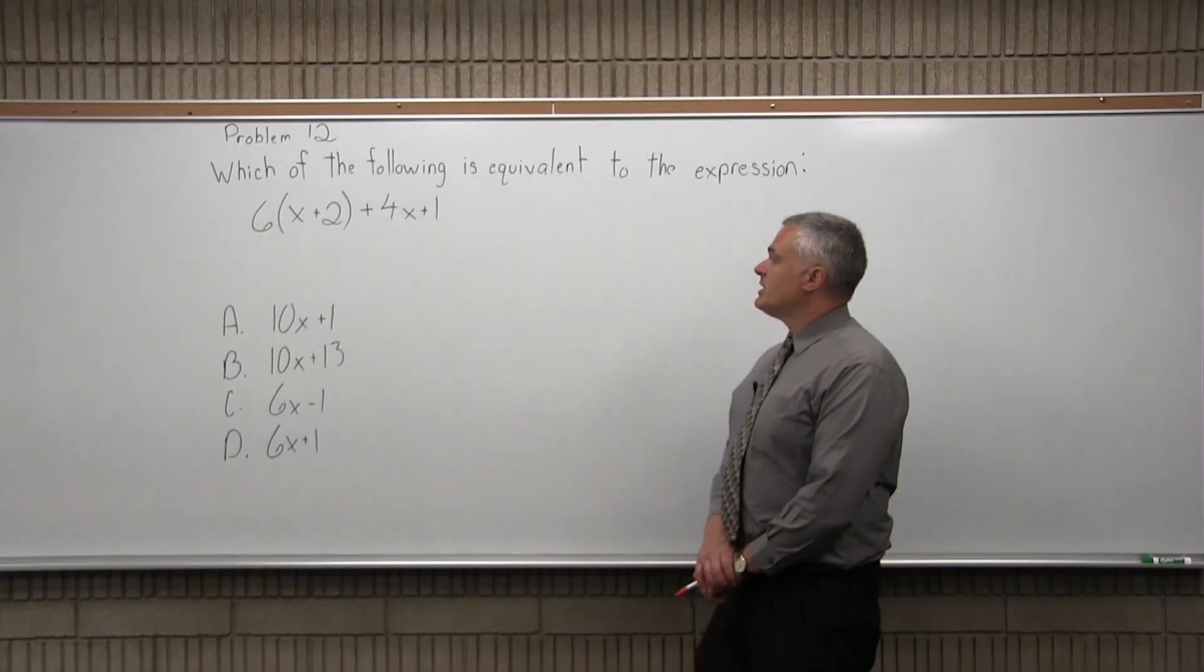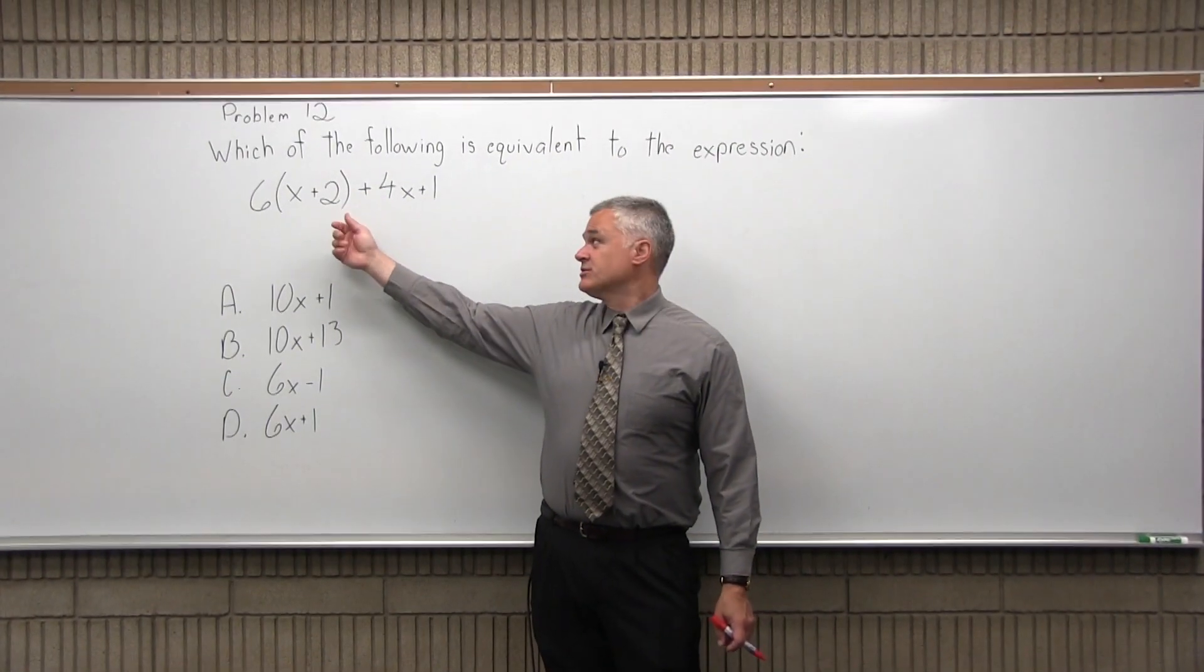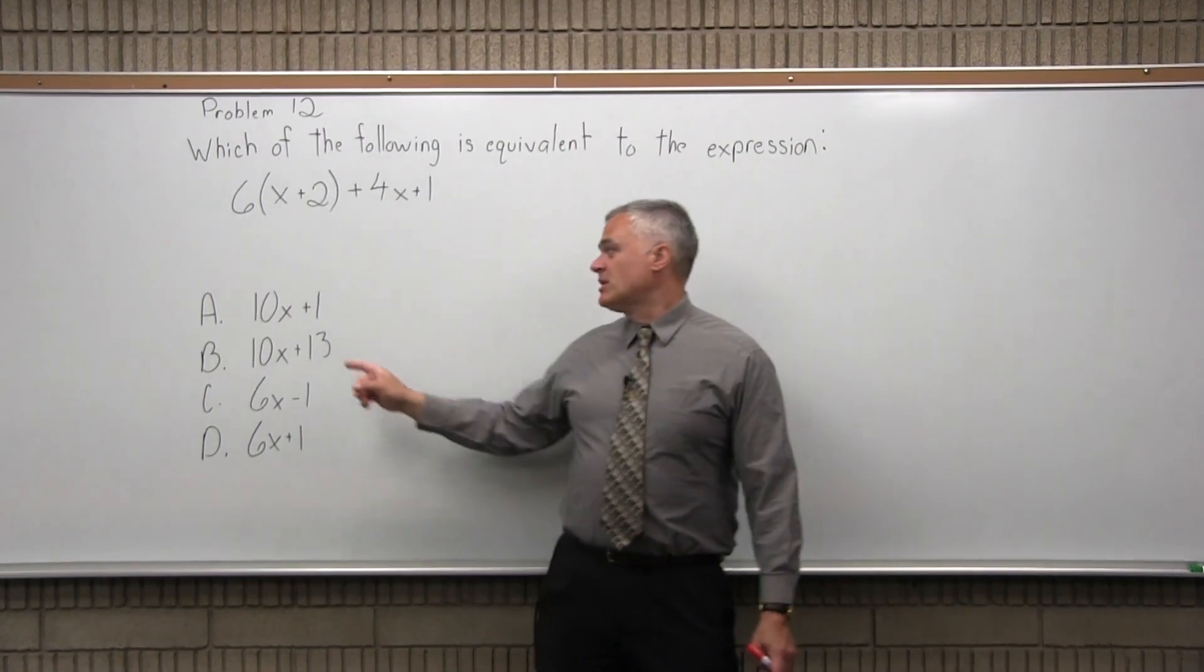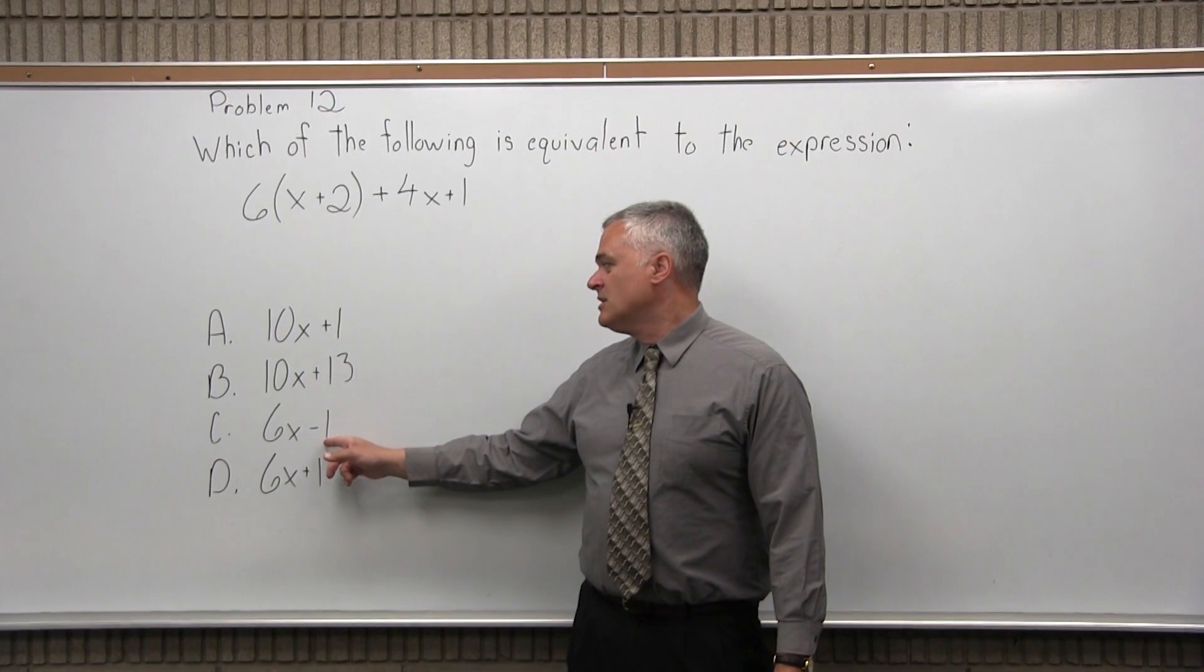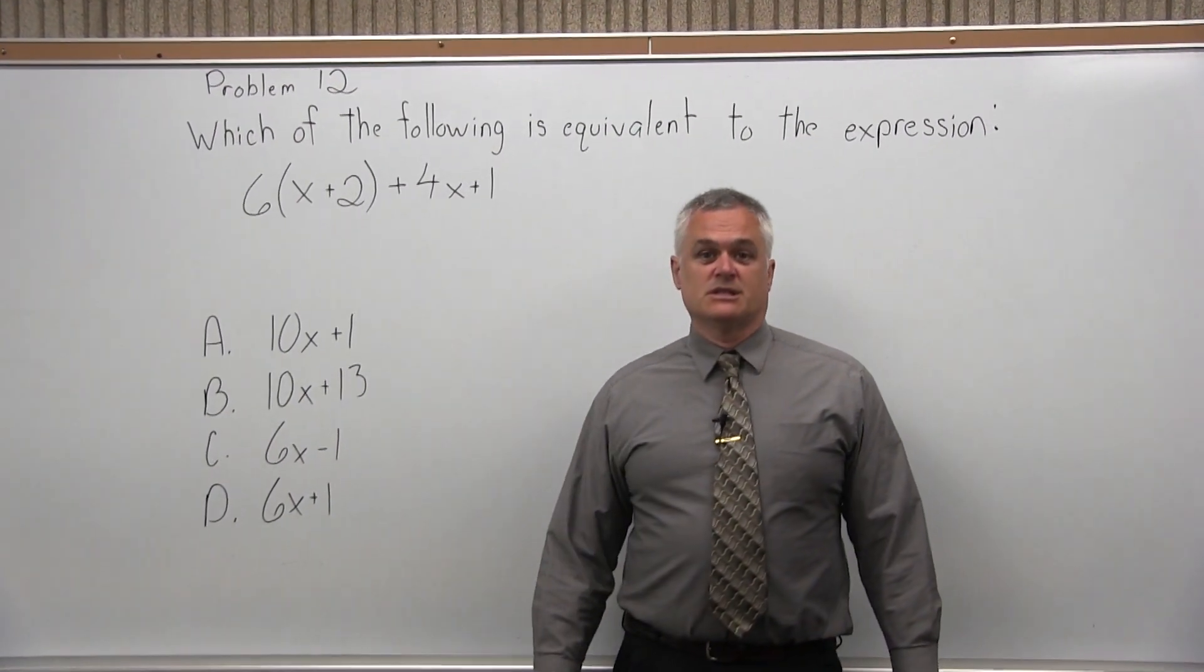This is Problem 12. It says which of the following is equivalent to the expression 6 times x plus 2, where the x plus 2 is in parentheses, plus 4x plus 1. And we have four options. Option A is 10x plus 1, Option B is 10x plus 13, Option C is 6x minus 1, and the last Option D is 6x plus 1.